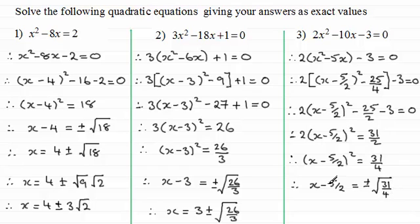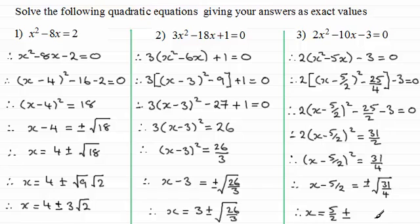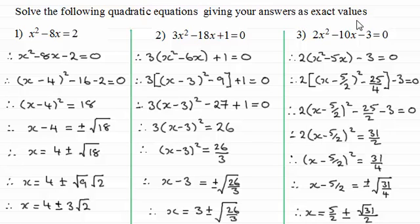Adding 5/2 to both sides: x equals 5/2 plus or minus root(31/4). Since we can square root the 4 in the denominator to get 2, this simplifies to x equals 5/2 plus or minus root 31 over 2. That's the exact answer. Remember, being asked for exact values is a clue that the equation won't factorize, and we use the method of completing the square.